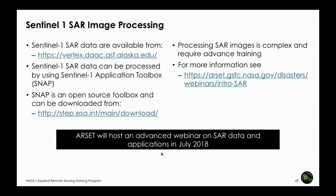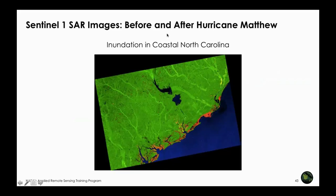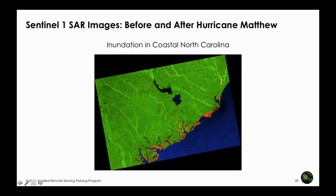Here is an example showing before and after Hurricane Matthew using SAR. The approach uses backscatter data from before and after the hurricane, applying a color scheme so that orange/red areas indicate flooding and blue indicates permanent water. You can see coastal inundation and inland flooded areas. Sentinel-1 SAR images are freely available from the Alaska Satellite Facility. There is a tool called Sentinel Application Platform, or SNAP, for processing these images. ARSET provided an introductory webinar on SAR background, and a more advanced webinar is planned for July covering how to obtain and analyze SAR data.